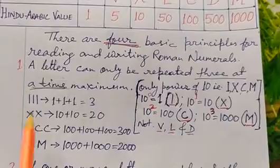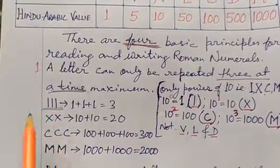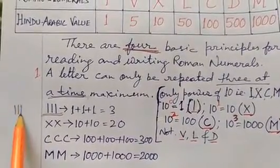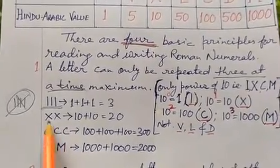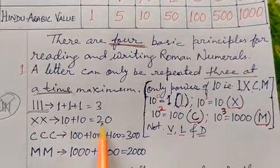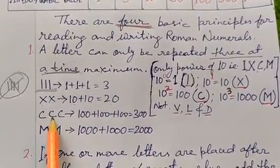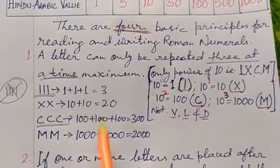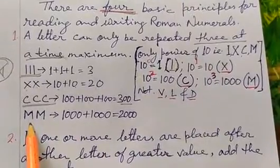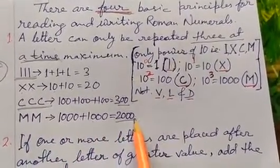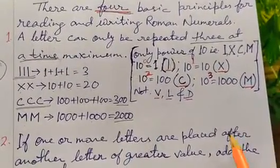Suppose I have to write 3, I can use I, I, I — so this value equals 3. I cannot write I four times; I can only use it 3 times. Similarly, XX is 10 plus 10 equals 20. CCC is 100 plus 100 plus 100 equals 300. MM is 1000 plus 1000 equals 2000. An important rule: only powers of 10 can be repeated — I equals 10⁰ = 1, X equals 10¹ = 10, C equals 10² = 100, M equals 10³ = 1000. V (5), L (50), and D (500) cannot be repeated.